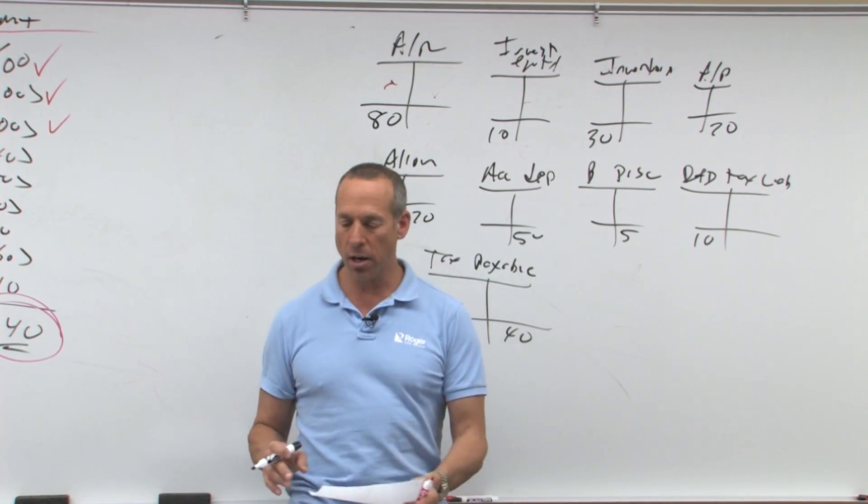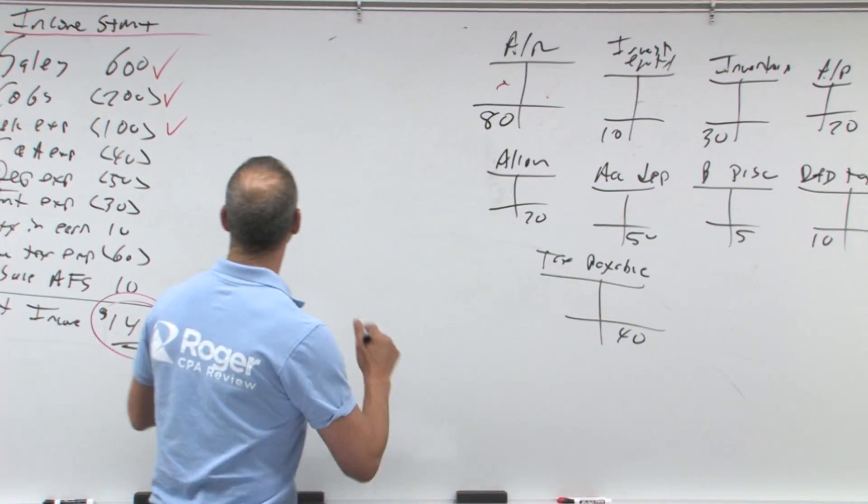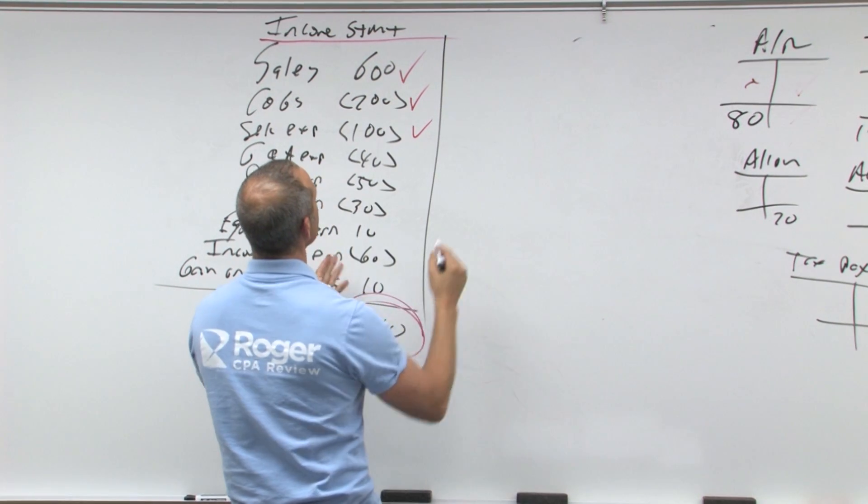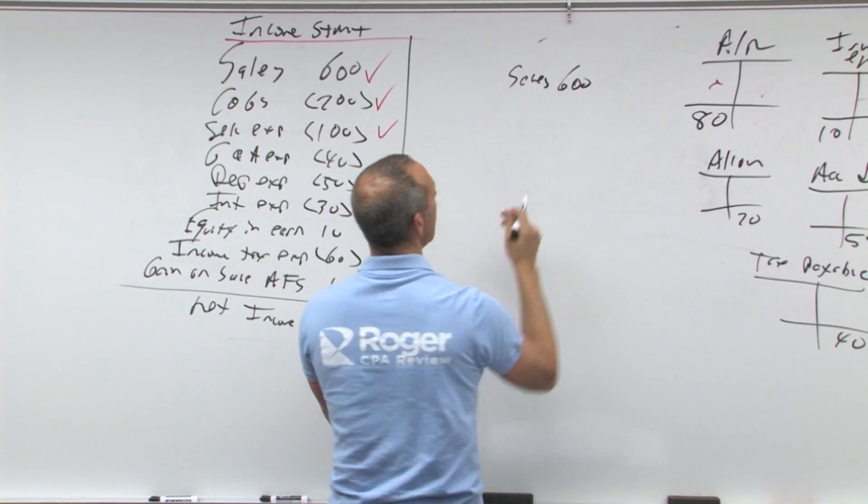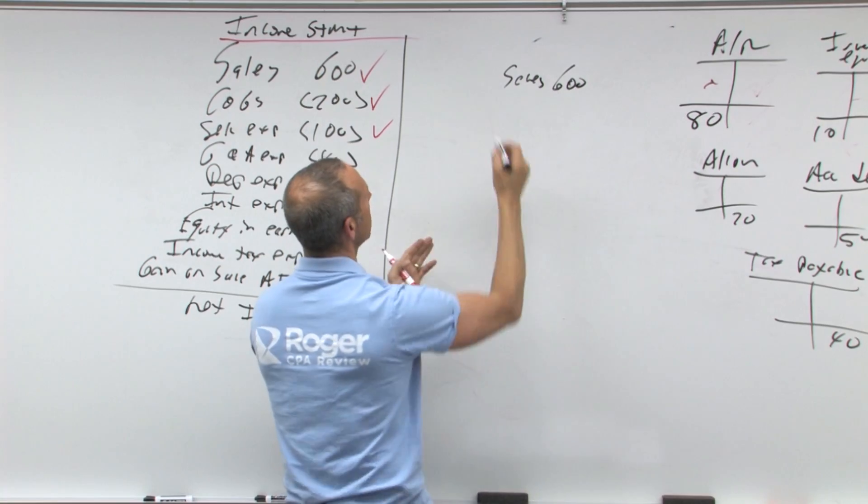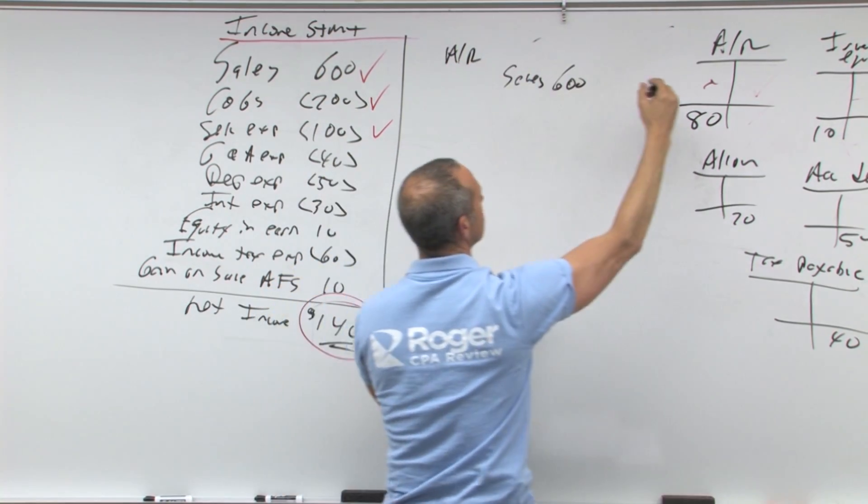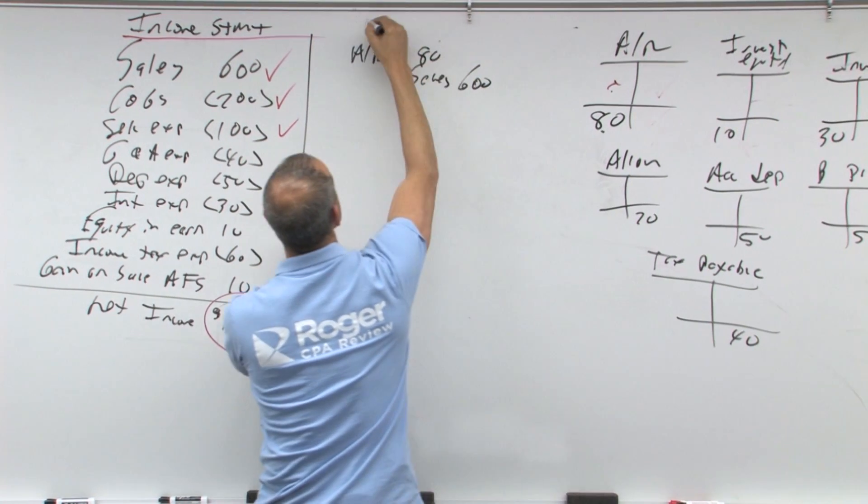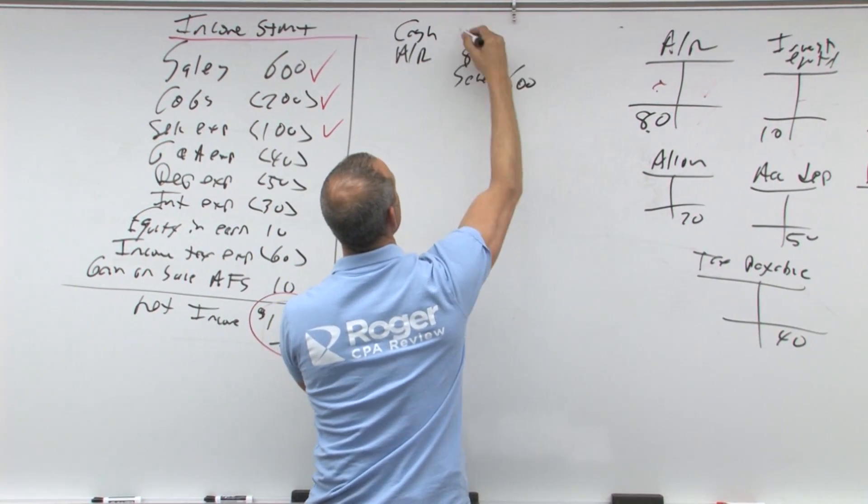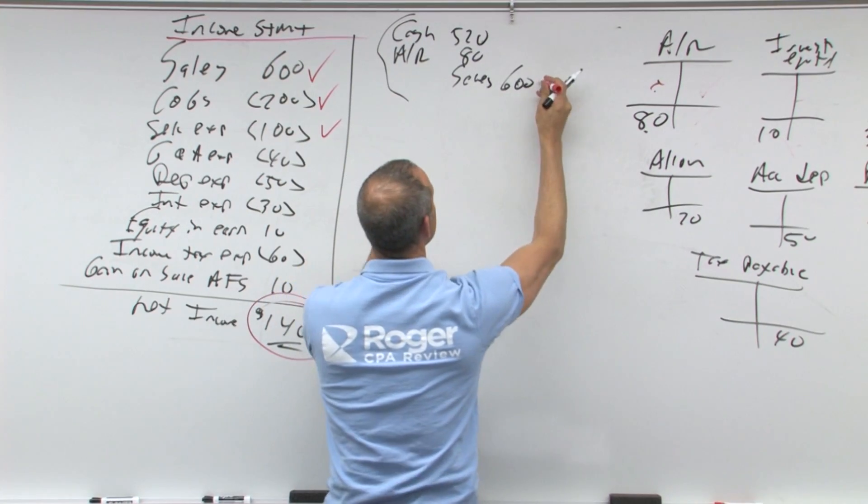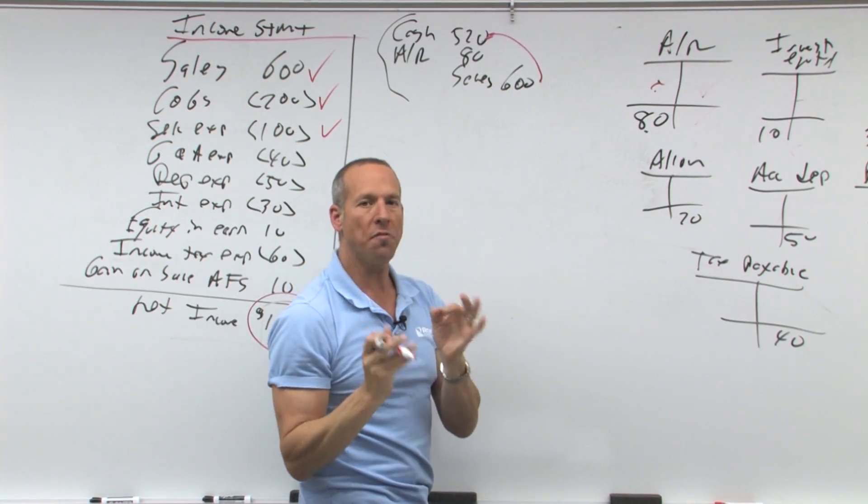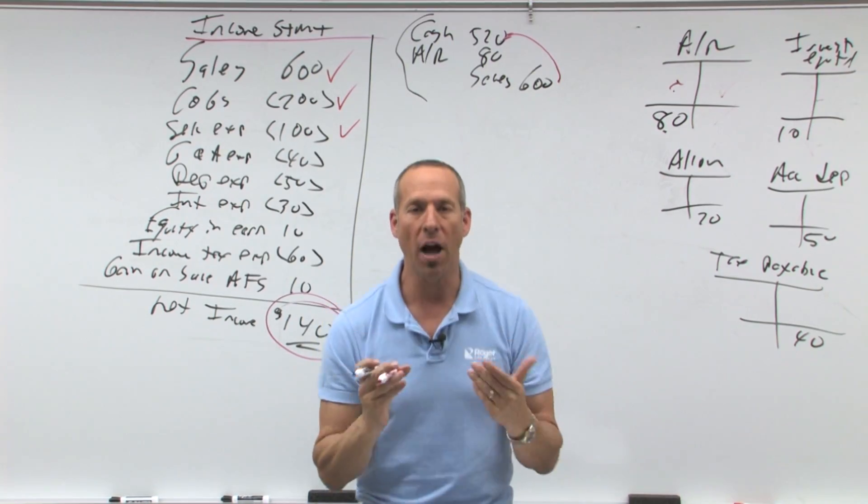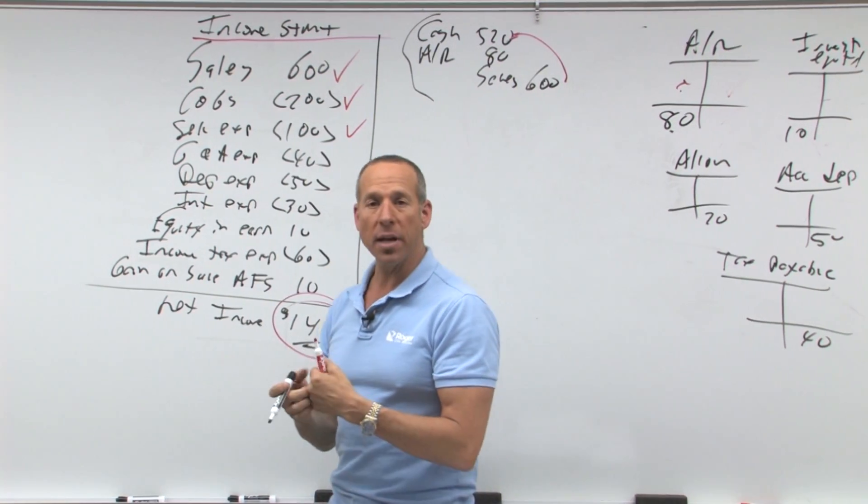Now, what we want to do is take every item, convert from accrual to cash. So the first item on my income statement is sales. What journal entry would have happened here? We would credit sales of 600. Sales are adjusted for changes in accounts receivable. So accounts receivable went up by 80, that's a debit. The difference must be cash collected, which would be 520. So notice I'm going from accrual back to cash. So of the sales of $600, I really only collected 520.